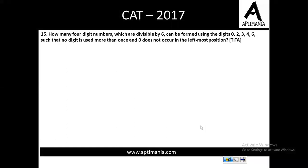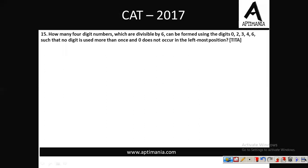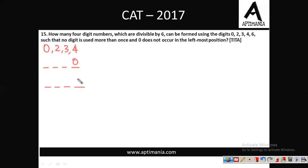Question number 15: How many 4-digit numbers divisible by 6 can be formed using the digits 0, 2, 3, 4, 6? Divisibility by 6 requires divisibility by both 2 and 3. For divisibility by 2, the units digit must be even (0, 2, 4, or 6). For divisibility by 3, the sum of digits must be divisible by 3. The first combination is 0, 2, 3, 4 — sum is 9, divisible by 3. To make numbers even, we place 0, 2, or 4 at the units place.